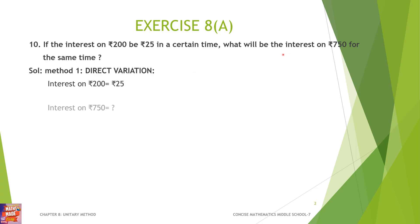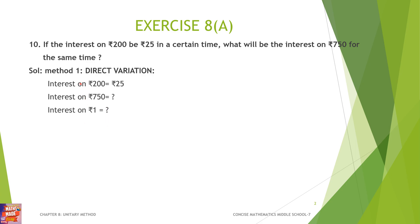And similarly, what interest does he get if he gives the money of 750? Now, we have to find out the interest on 1 rupee. For Rs. 200, he is getting Rs. 25. For 1 rupee, surely he will get less. Less means division. So, you are going to divide — 25 divided by 200.